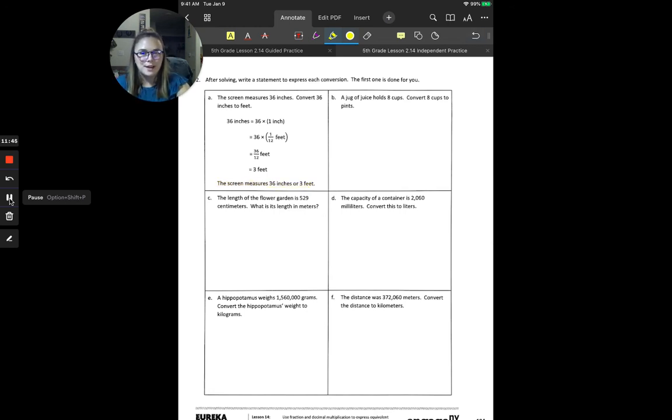So, I want you to try to write out a statement for your answer. It's okay if you can't get that statement out. But I want you to give that a try for at least a couple of them. And just like yesterday, I'm going to give you the conversion factors for each of these. But there is a conversion chart on Canvas as well. So, for B, it's talking about a jug of juice holding eight cups and converting cups to pints. So, one cup is equal to five-tenths pints. Or if you prefer fractions, one cup is equal to one-half pints. C is centimeters to meters. So, like we talked about a couple of minutes ago, one centimeter is one-hundredth meters.